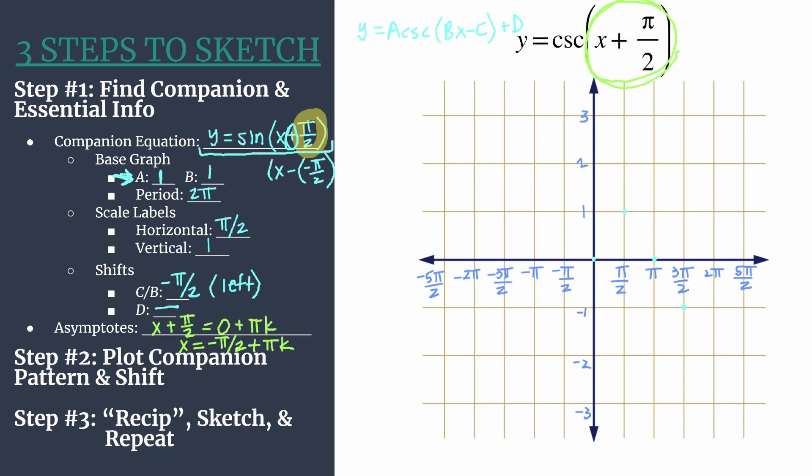Take each of your light dots from your companion unshifted sine, and just move them to the left pi over 2. I'm going to mark these with x's. This is still not quite the final graph, but move each of those points left pi over 2. So that's step 2 taken care of.